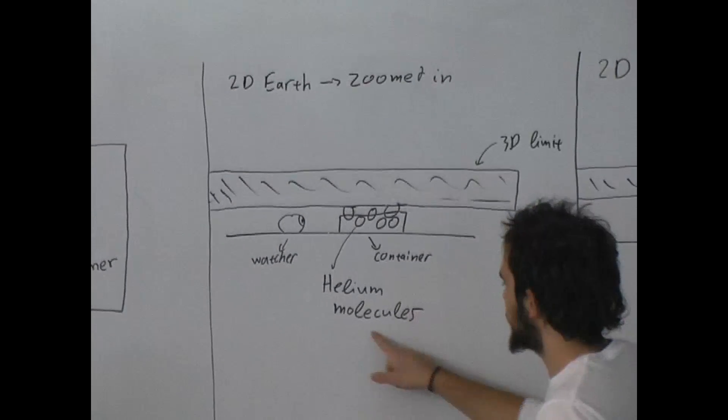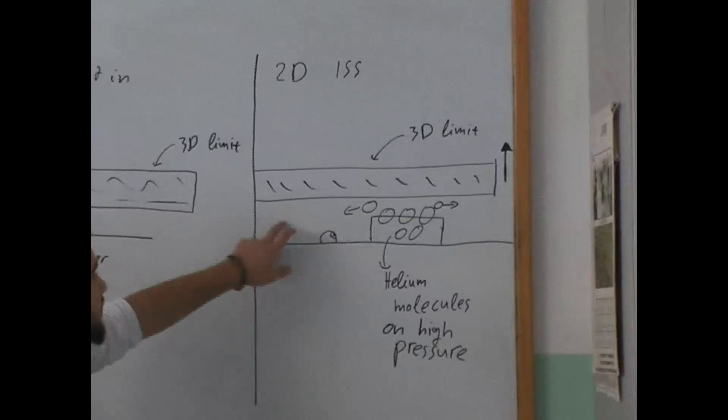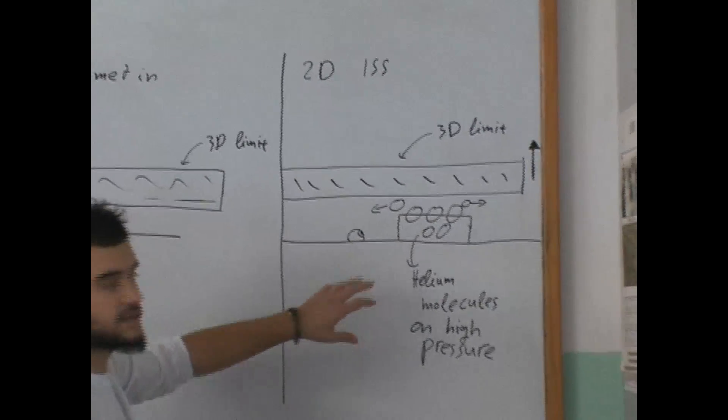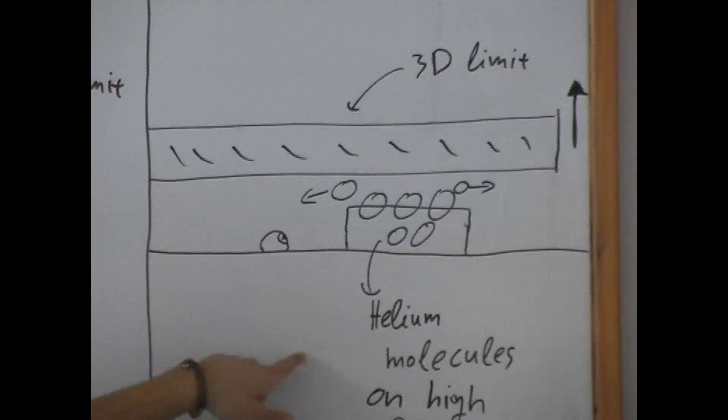But if in space the 3rd dimension grew a little bit, the molecules again would run off the container as explained by the example of the astronaut.